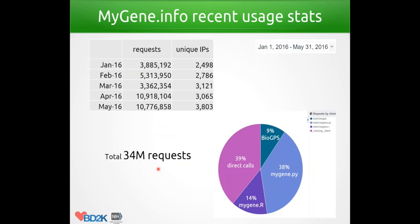For both mygene.info and myvariant.info, they have similar endpoint patterns: you can retrieve a gene or variant by ID, or make a query to get matched genes or variants using the query endpoint. Recent usage from mygene.info is really exciting — from January to May of this year we got over 30 million requests, which is excellent in terms of API provider usage.